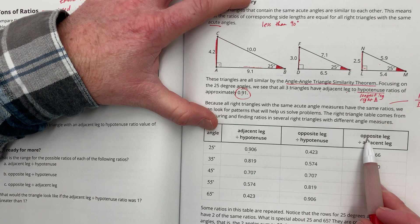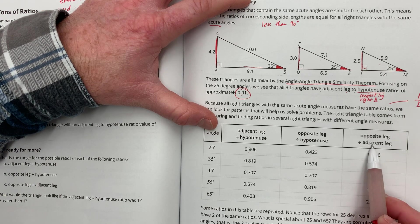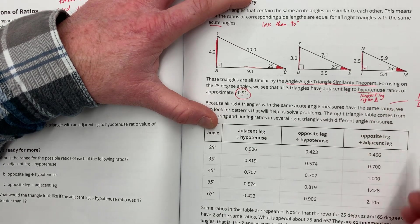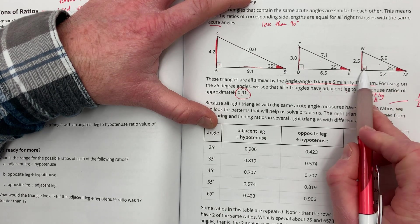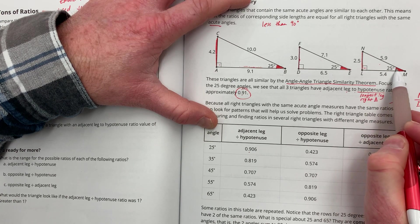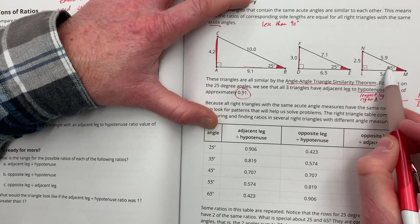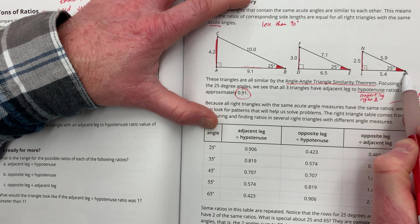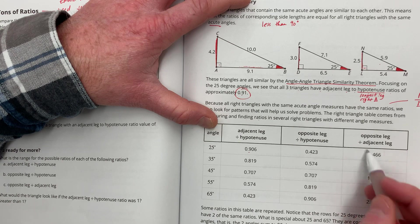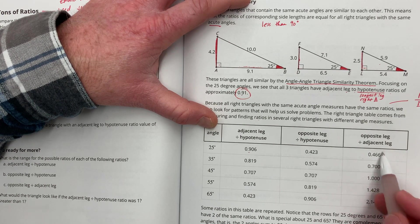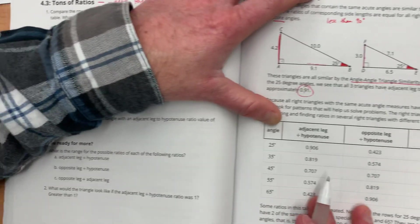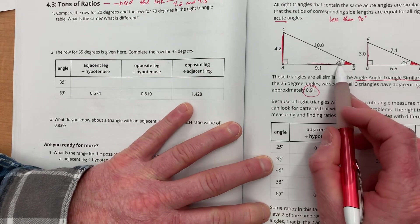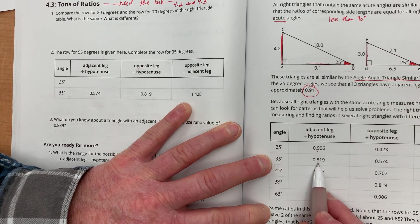So, the opposite divided by the adjacent in a right triangle with a 25 degree angle. So, the opposite one from the opposite angle, divided by the adjacent leg will always equal these numbers, or will always equal this number for 25. Now, if instead it was a 35, instead of 25, the ratios would be here.